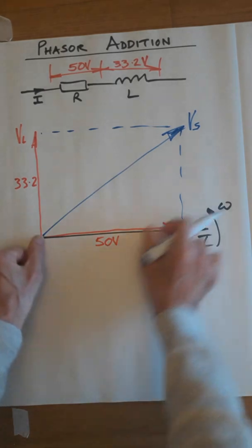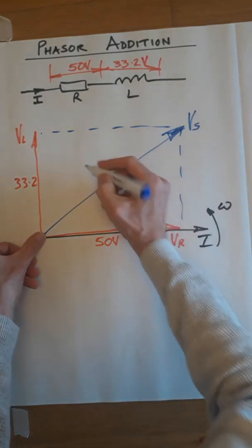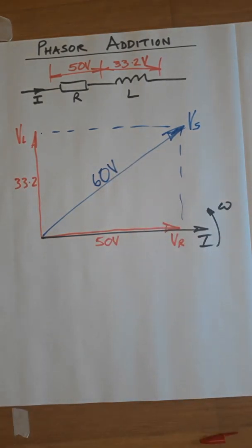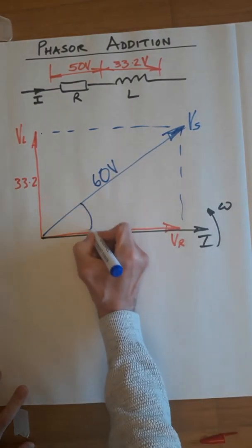And if you measure it, you get your ruler, and you measure this, I'm hoping you're going to come out with 60 volts. OK, so that's the first bit done.